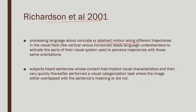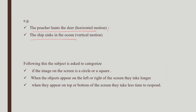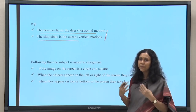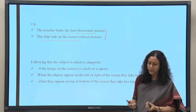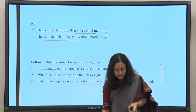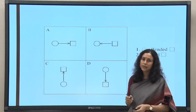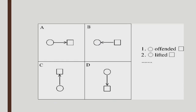Sentences were given where subjects heard sentences whose content had implied visual characteristics. While hearing the sentence, the simulation makes you imagine it. Immediately after, they had to do a judgment task: whether the object on the screen was a square or a circle. There is no surface connection between the sentence and the image. But the crucial manipulation is that in one case 'the poacher hunts the deer' implies a horizontal motion, while 'the sheep sinks in the ocean' implies a vertical motion.